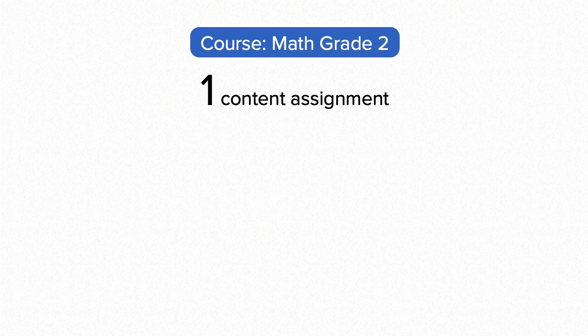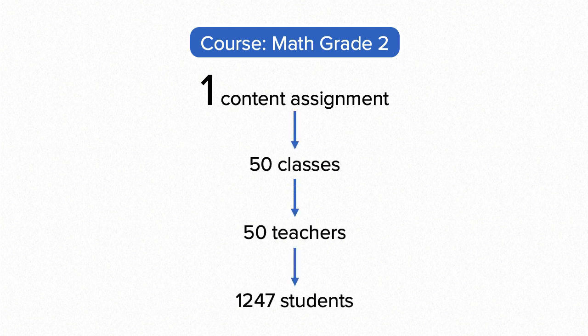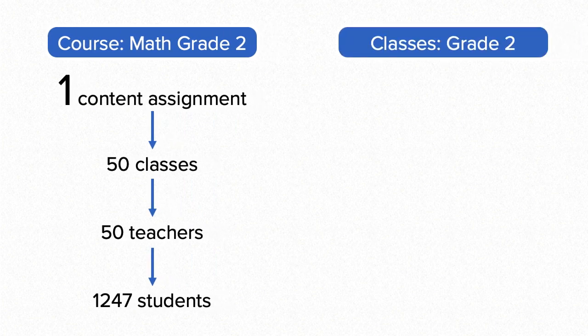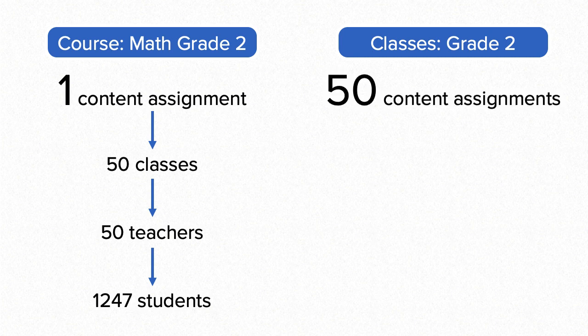For example, if my Math Grade 2 course is affiliated with all 2nd grade classes across the district, then making that one assignment on Access Manager takes care of assigning the product to every student and teacher in all 50 2nd grade classes. If I assign content by class, or if we created a course for each class, I'd need to make 50 content assignments. And if you assign by user, it takes even longer.